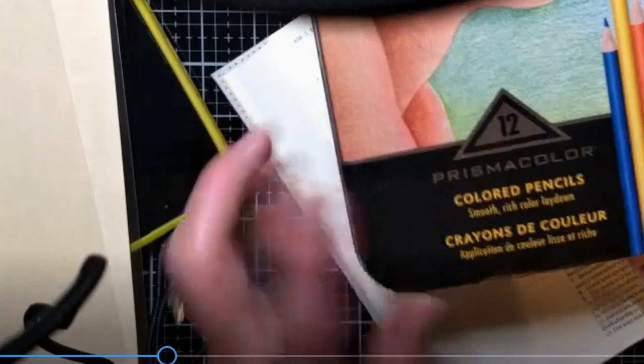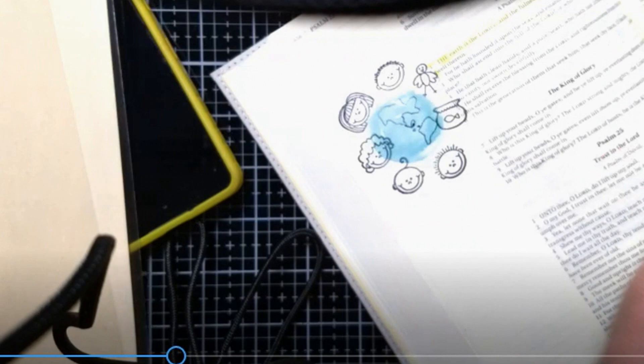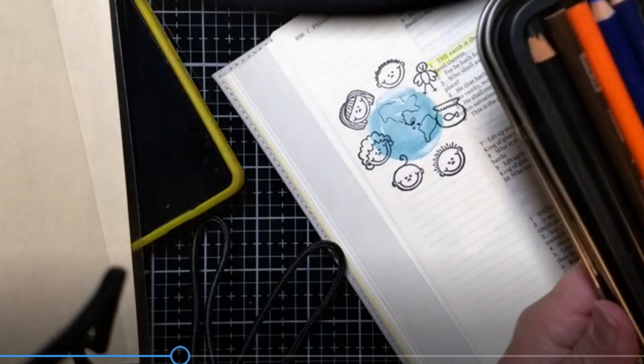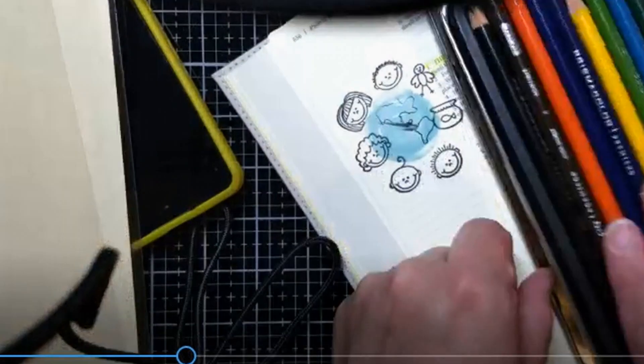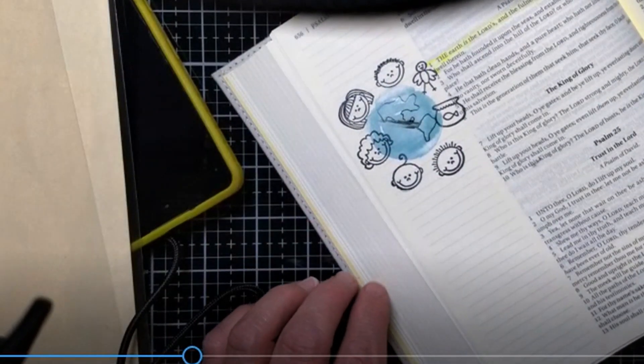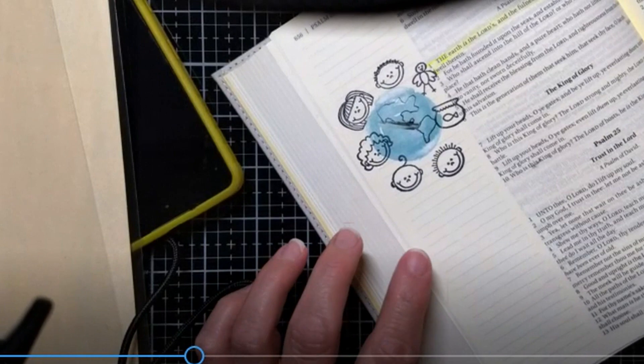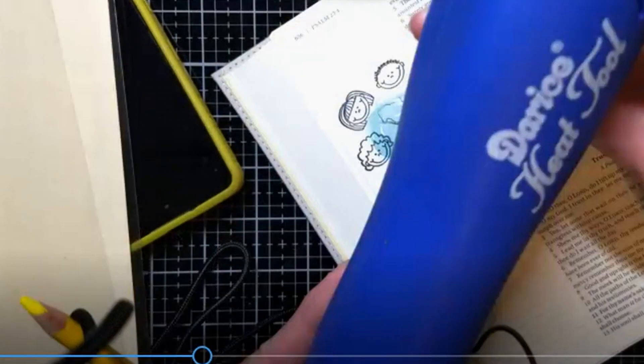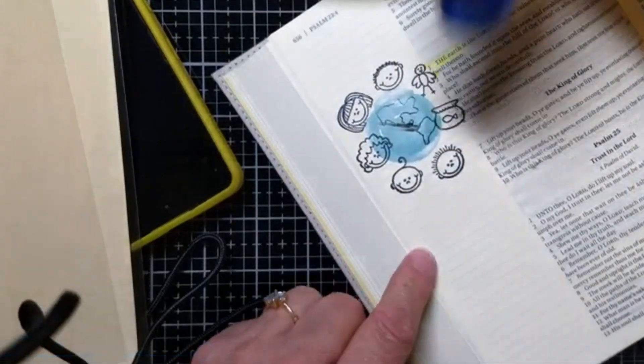Prismacolor colored pencils, this is the 12 set of the Prismacolor colored pencils. One of the things I did with this was I put one of those magnets here so that it stays together. Let's see here. I'm going to go ahead and use my heat tool, my Darice heat tool, to make sure that this is dry before I start coloring.